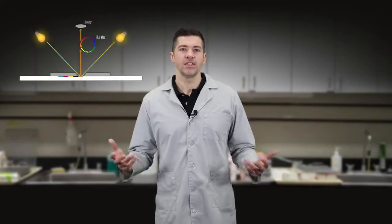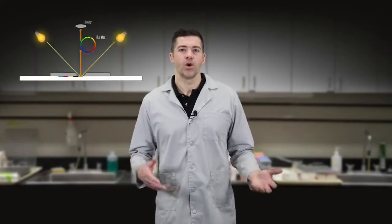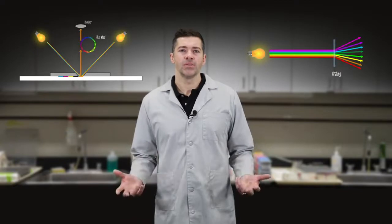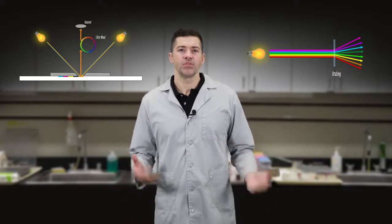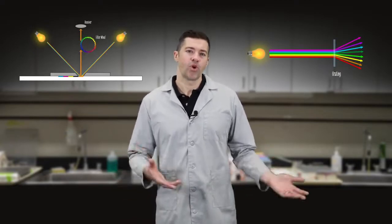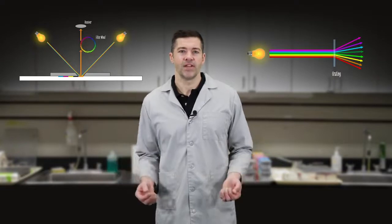This is typically achieved within an instrument using a spinning filter wheel of specially designed colors or diffraction grating. The resulting measurement is the sample's reflectance curve with a varying wavelength from around 400 to 700 nanometers. From this, we can compare the curves of two samples to see if they are a match.